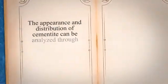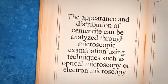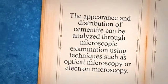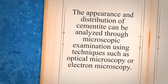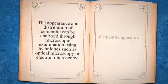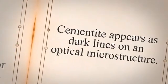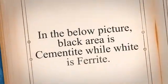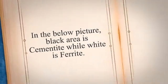The appearance and distribution of cementite can be analyzed through microscopic examination using techniques such as optical microscopy or electron microscopy. Cementite appears as dark lines on an optical microstructure. In the picture shown, the black area is cementite while white is ferrite.